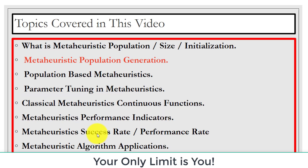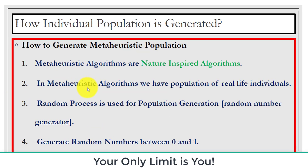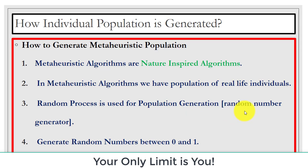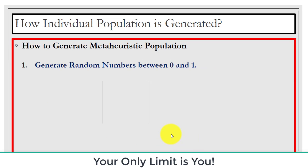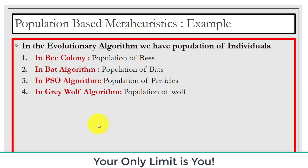How is individual population generated? As we know, metaheuristic algorithms are nature-inspired, so they are inspired by real-life individuals or different species. In metaheuristic algorithms we assume a population and generate it using random numbers. We use a random number generator and the population is generated between 0 and 1. Here the population size is 5, so we have 5 individuals.